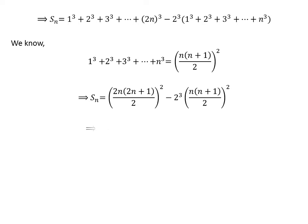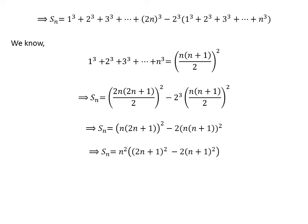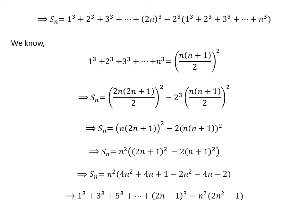Cancelling common factors in both fractions, we get Sn equal to the square of (n times (2n plus 1)) minus 2 times the square of (n times (n plus 1)). Since n² is a common factor, we get Sn equal to n² times ((2n plus 1)² minus 2 times (n plus 1)²). Expanding and simplifying gives the final result: the sum of cubes of the first n odd numbers equals n² times (2n² minus 1).